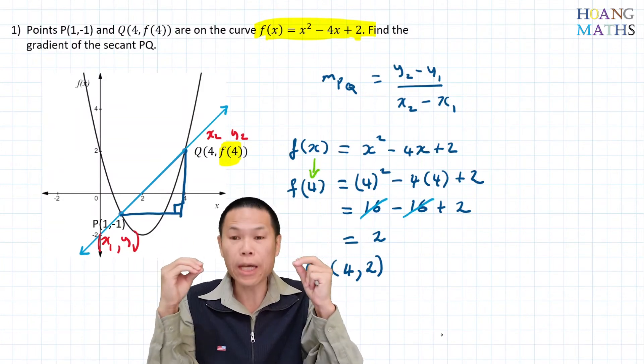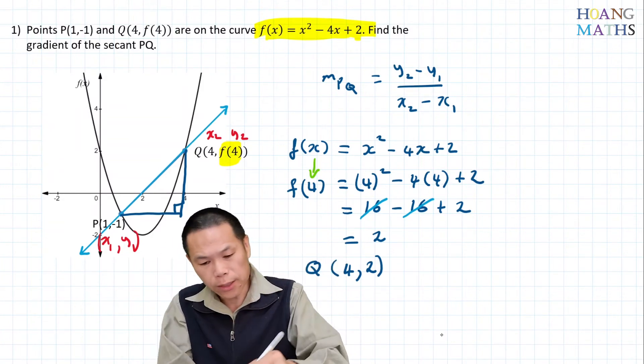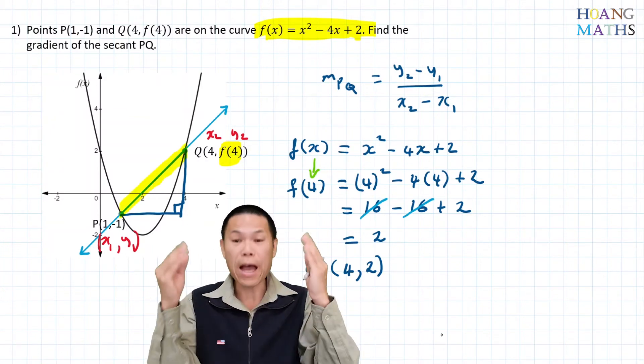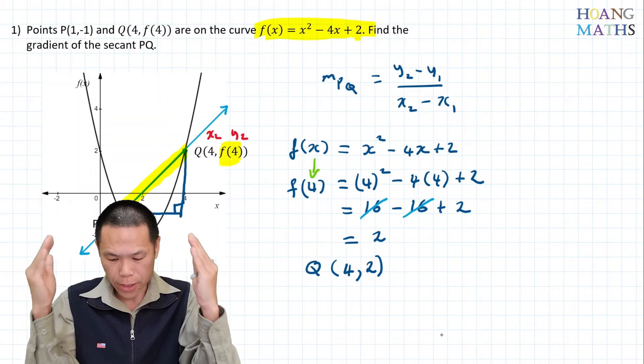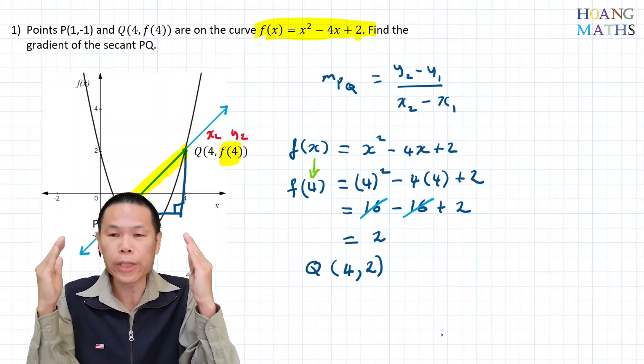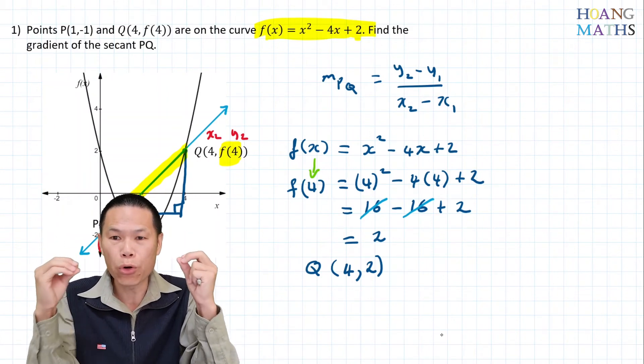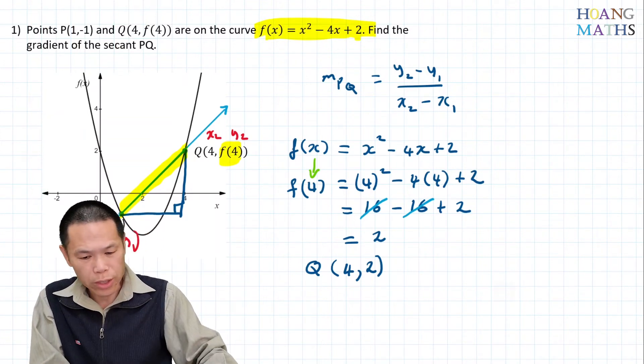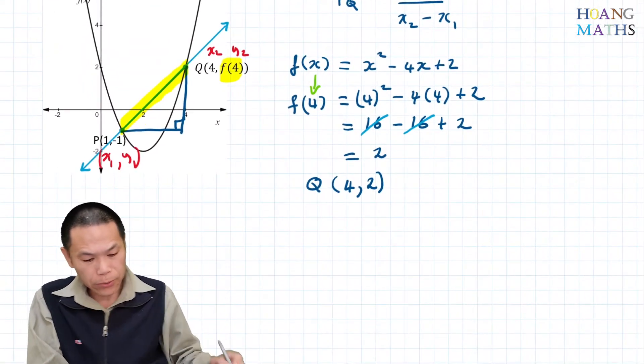Now we need to find the gradient of P and Q - that's the gradient of this secant here. The gradient of PQ is also the rate of change between point P and Q.